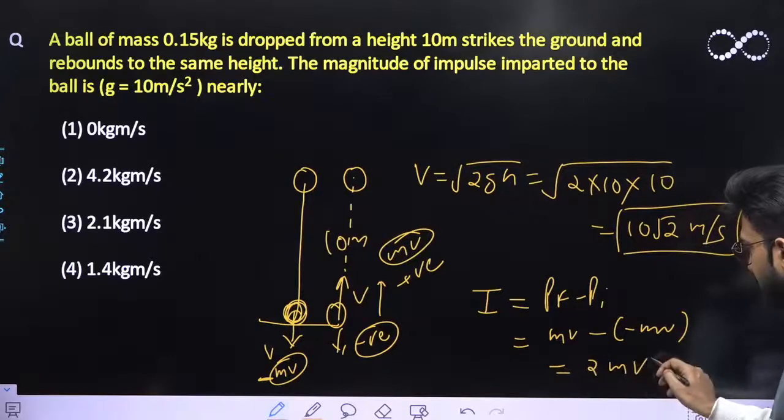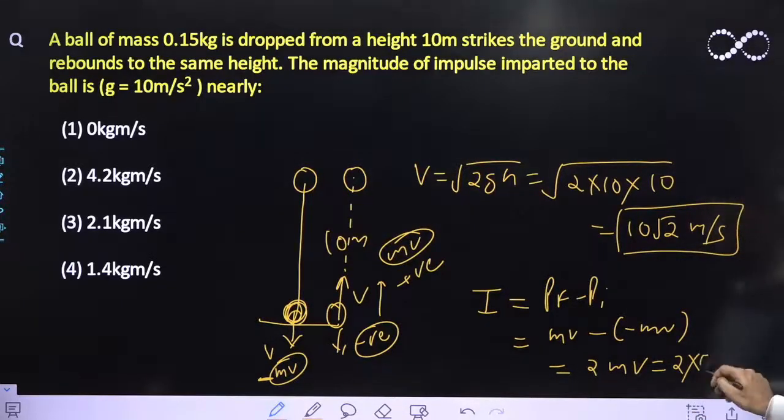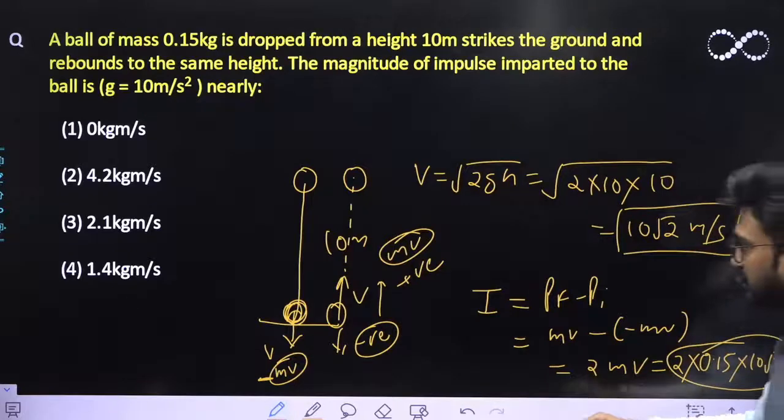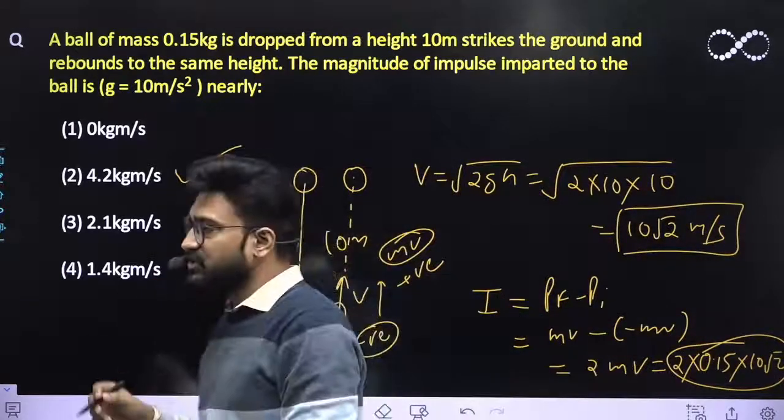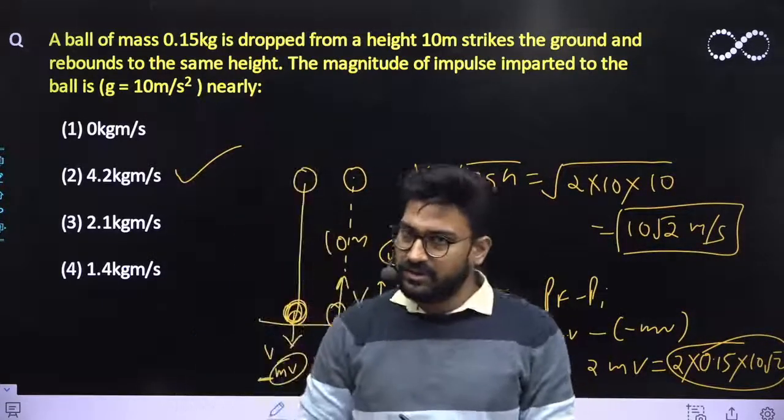So it comes out to be 2m·v. This is nothing but 2 into mass, which is 0.15, into v. What is speed? 10√2. Solving it, you will be getting the final answer as 4.2 kg·m/s.